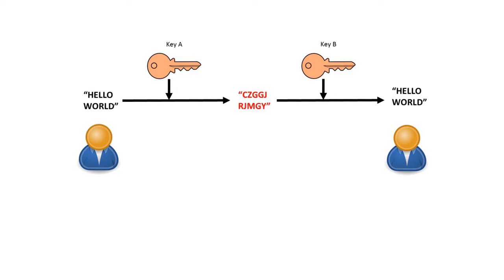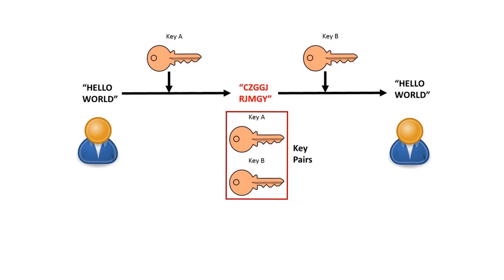The main difference with asymmetric encryption is that we use two totally different keys. We start with our unencrypted message and encrypt it with the first key. At the other end, the message is decrypted by a second key. The key used to initially encrypt the message is not the same key required to decrypt it. It's virtually impossible to work out one key from the other, so owning a copy of either key won't allow you to work out what the other one is. They're generated in such a way that anything encrypted with one of the keys can be decrypted by using the other. Together, these keys form what we call key pairs.